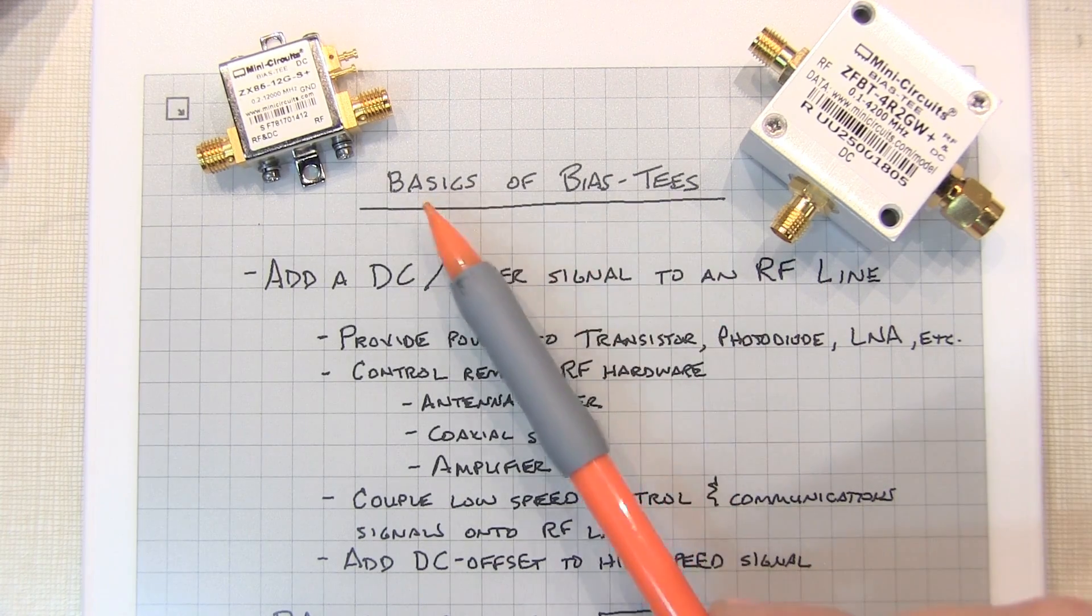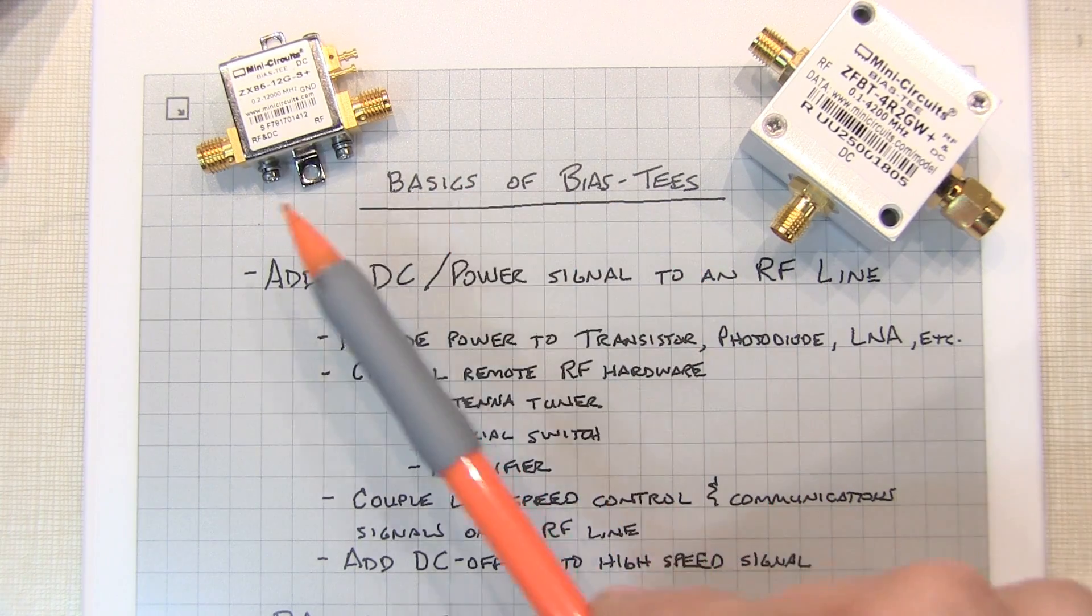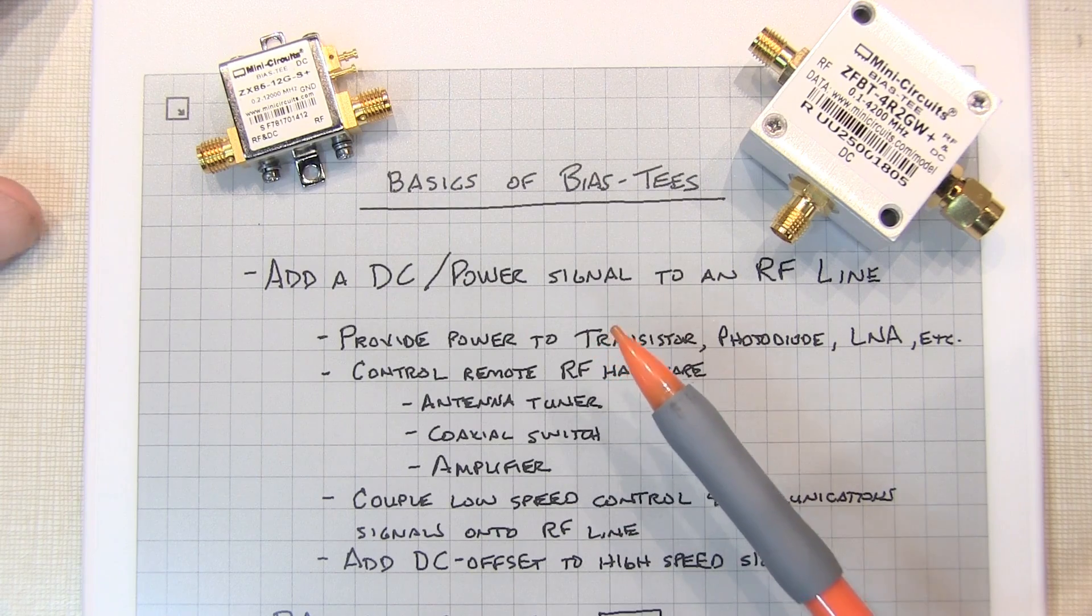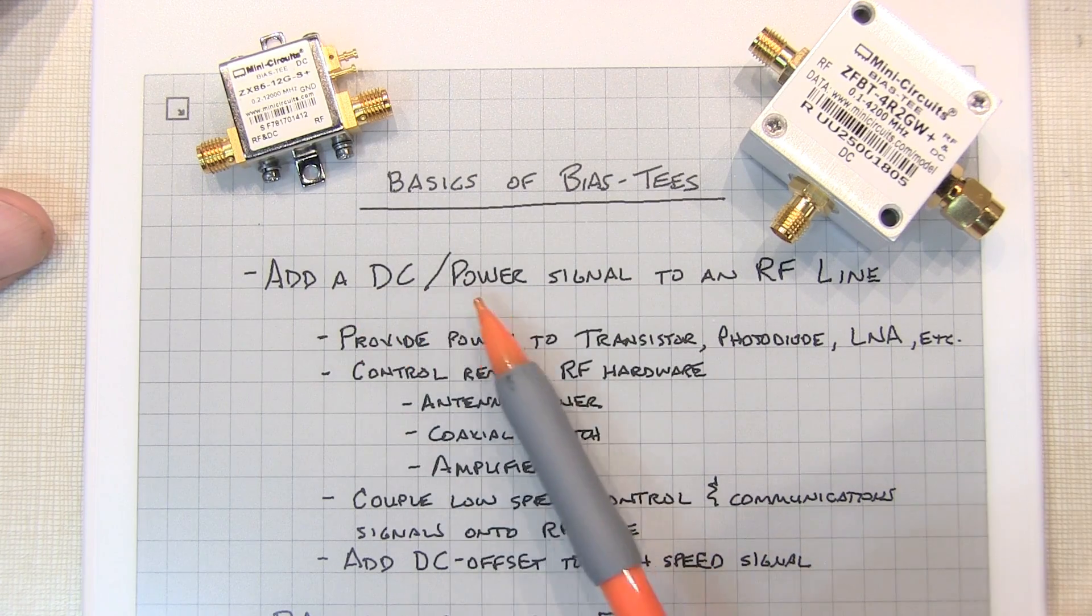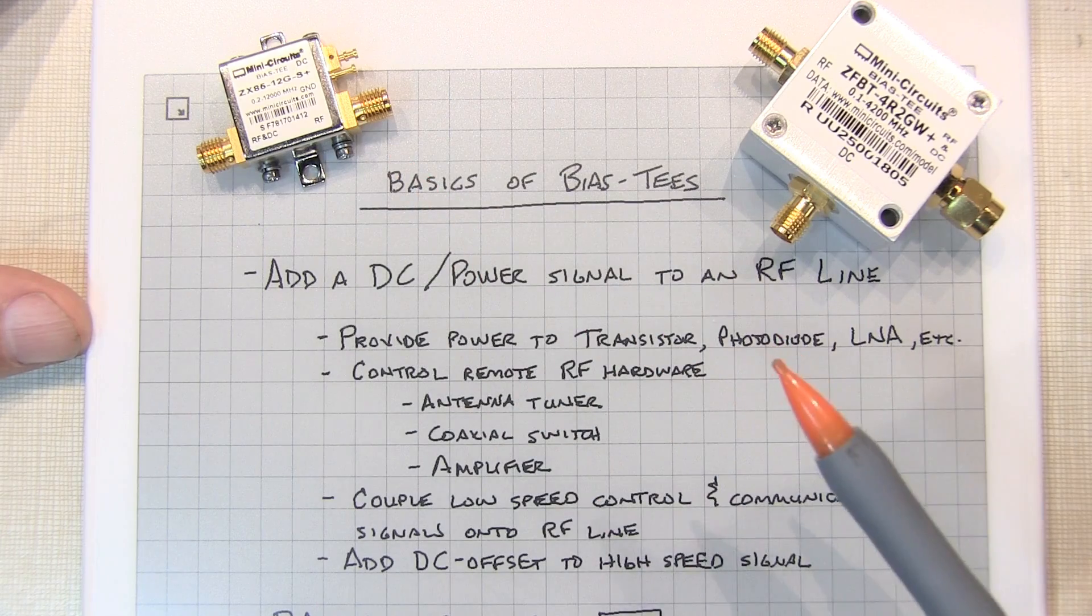In today's video, we're going to take a look at the basics of bias tees. These coaxial RF components are used whenever you want to add a source of DC power or even control signals to an RF line.